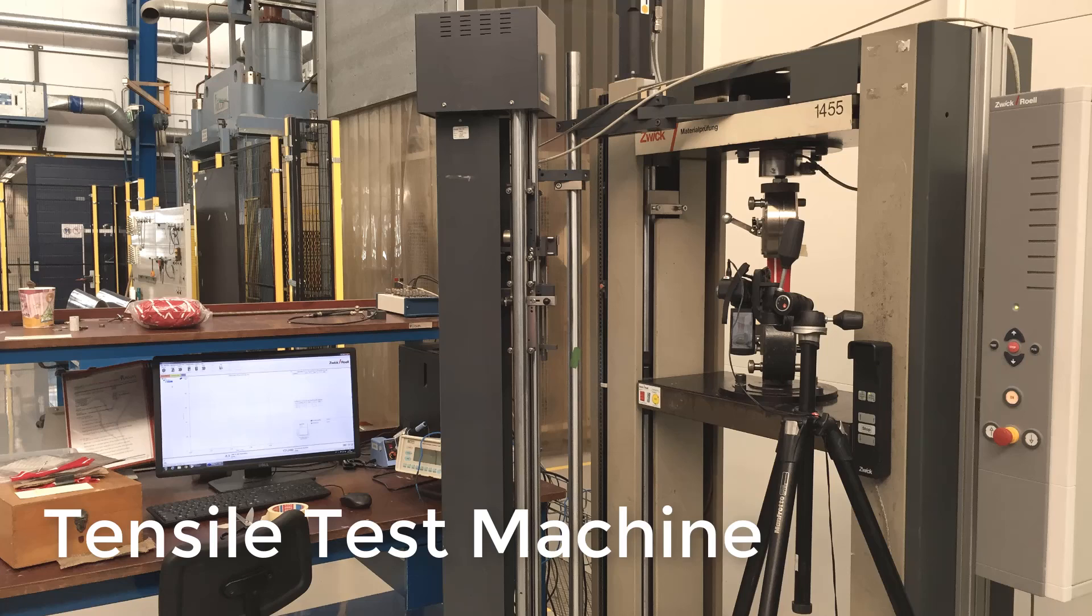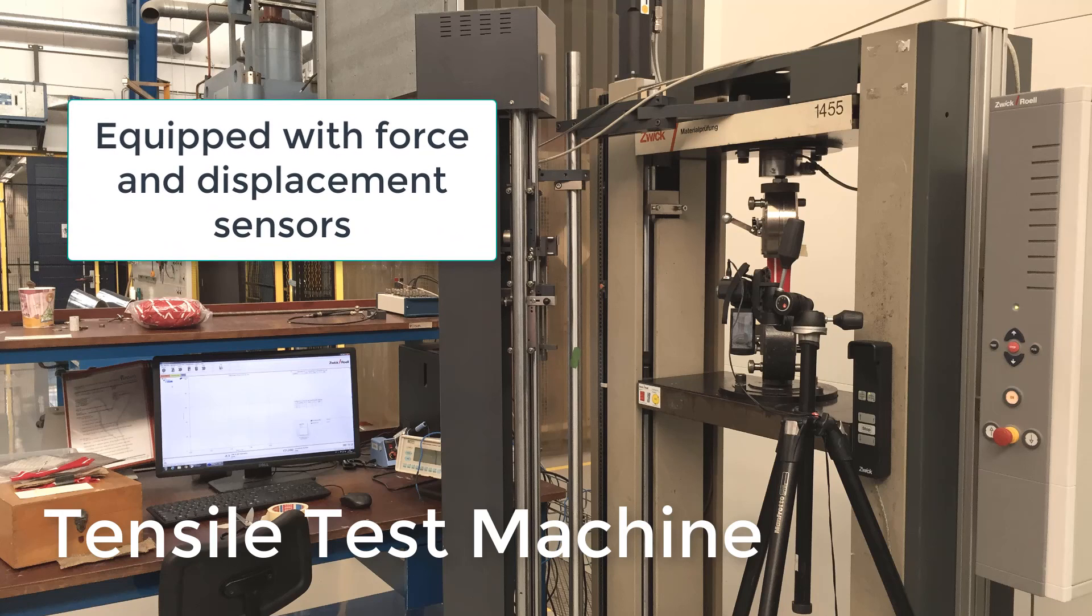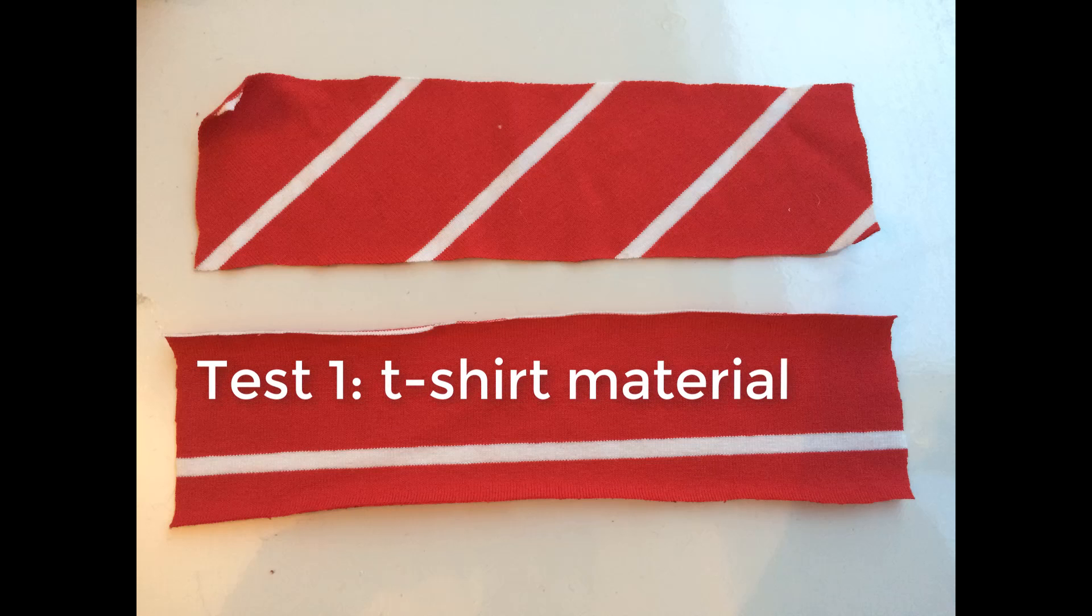For this test, we will use the tensile test machine shown here. This machine has sensors in it that can measure both the force and displacement as we run the tests. First, we will test the t-shirt material.